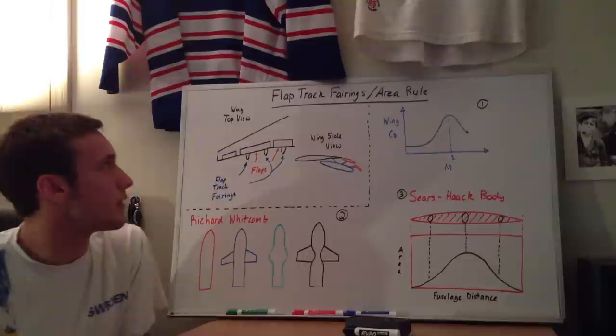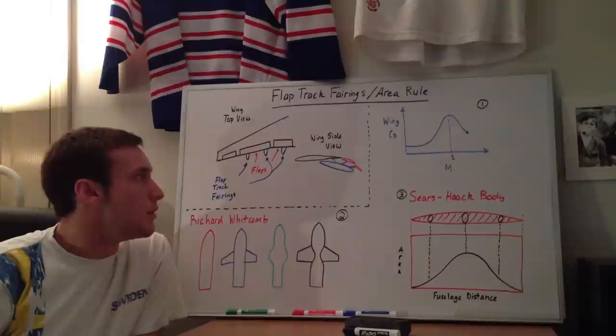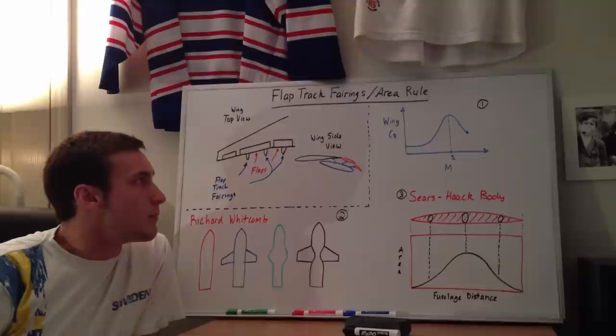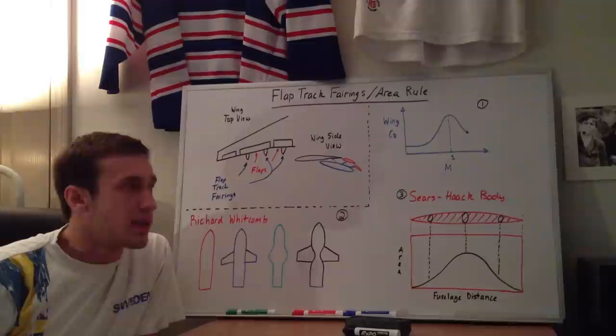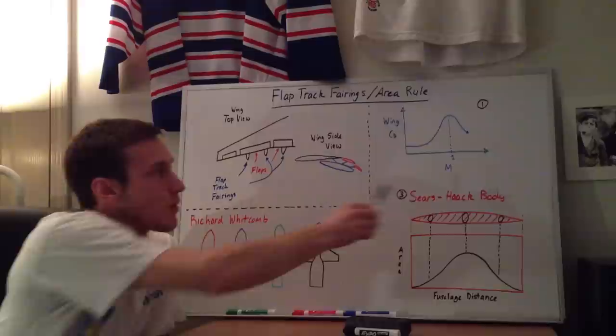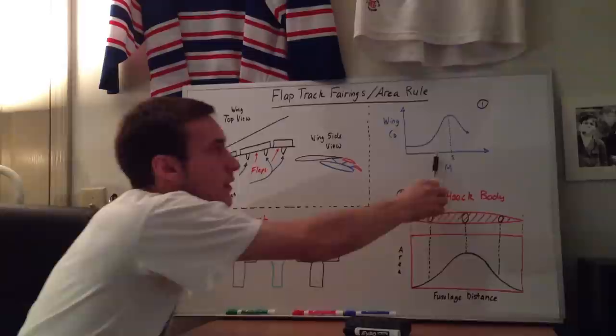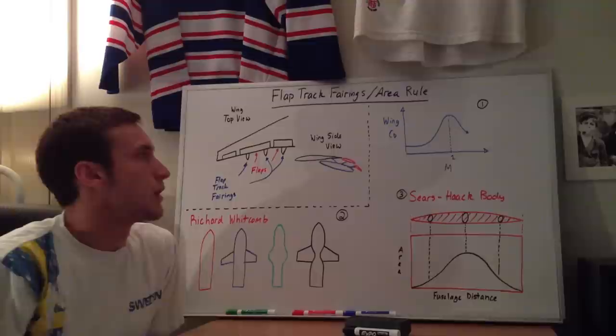So how is the area rule connected to flap track fairings? When we're flying in commercial planes, we're in the transonic region, where we're getting close to the critical Mach number. In this range, this is a plot of the wing drag coefficient versus the Mach number — the transonic range is usually from around Mach 0.85 up a bit. As we're in the transonic range, the wave drag increases significantly.